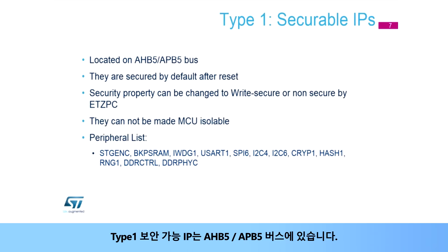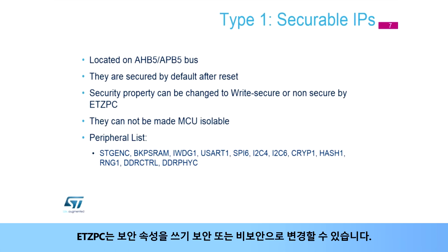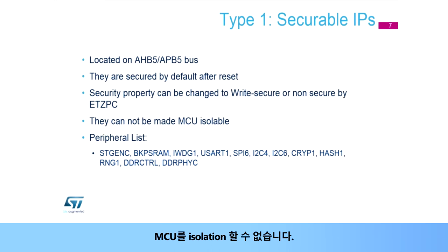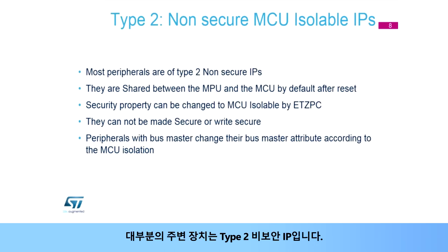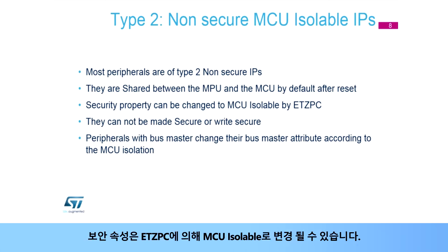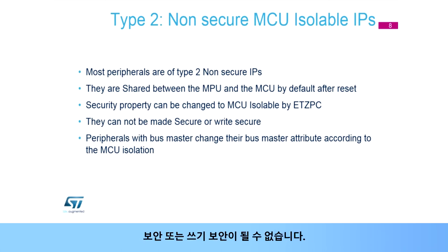Type 1 securable IPs are located on the AHB5 and APB5 bus. They are secured by default after reset. The security properties can be changed to write secure or non-secure by ETZPC. They cannot be made MCU isolable. Most peripherals are of Type 2 non-secure IPs. They are shared between the MPU and the MCU by default after reset. The security property can be changed to MCU isolable by ETZPC. They cannot be made secure or write secure.